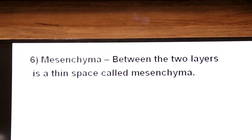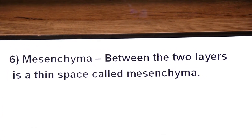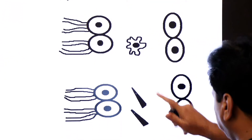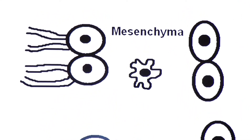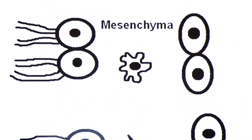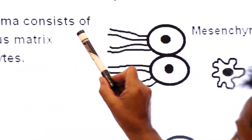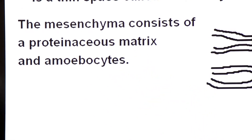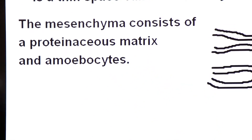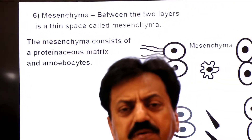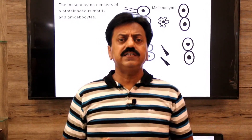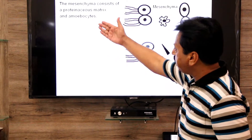The mesenchyme is made up of a proteinaceous matrix and amoeba-like cells called amoebocytes. These amoebocytes are of different types, each specialized for different functions.